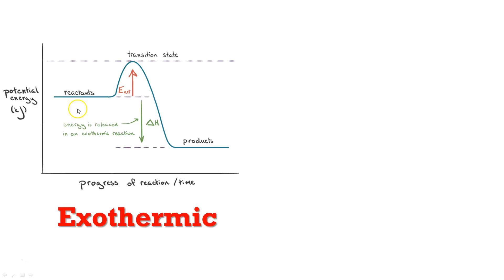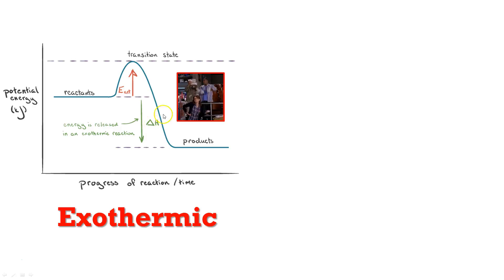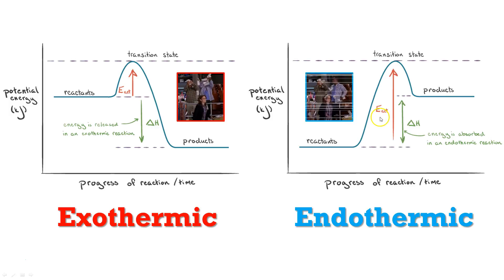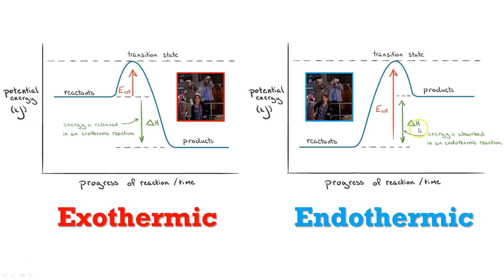Let's recap. Here we have the exothermic reaction: the products are going to be much more stable than the reactants, and delta H is going to be negative because we're losing that energy — losing that money as heat. The endothermic reaction is the exact opposite: energy is being absorbed, we're pulling that heat in, and delta H is going to be positive.